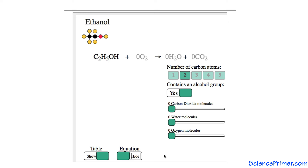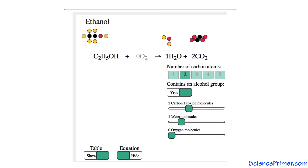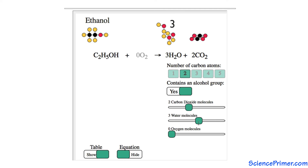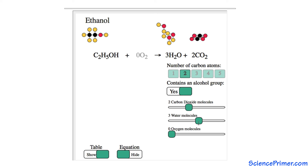An ethanol molecule contains six hydrogen and two carbon atoms. A carbon dioxide molecule contains one carbon atom, so converting all of the carbon in ethanol to carbon dioxide produces two molecules of carbon dioxide. Water molecules contain two hydrogen atoms each, so the six hydrogens in ethanol are incorporated into three water molecules. There are now the same number of carbon and hydrogen atoms on either side of the equation. The addition of water and carbon dioxide as products added oxygen atoms.